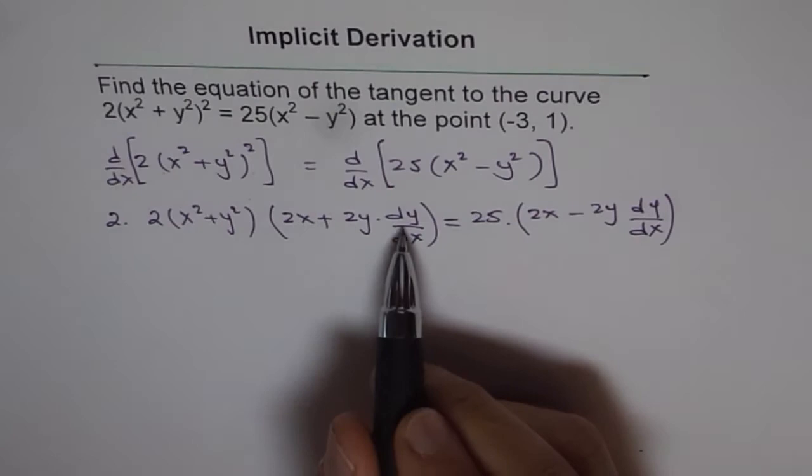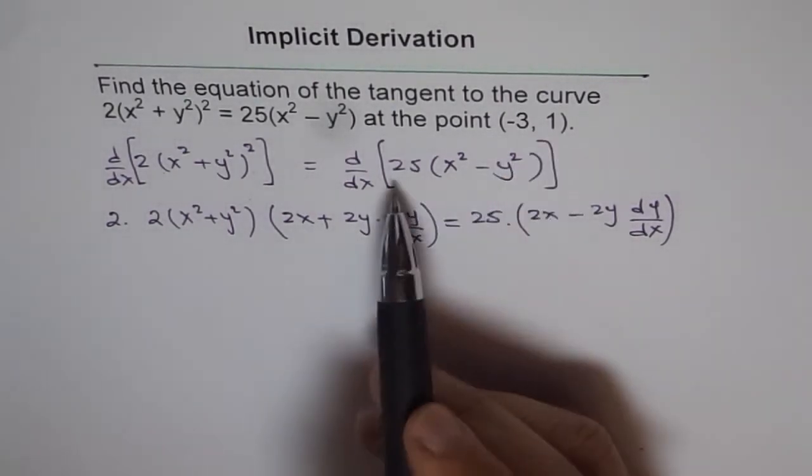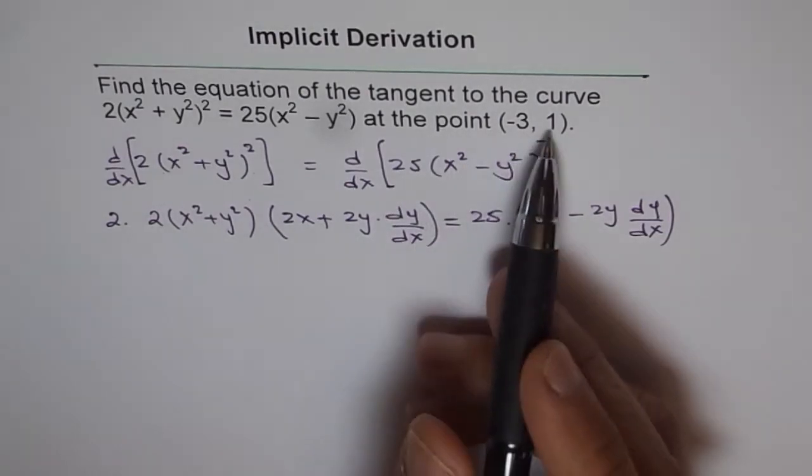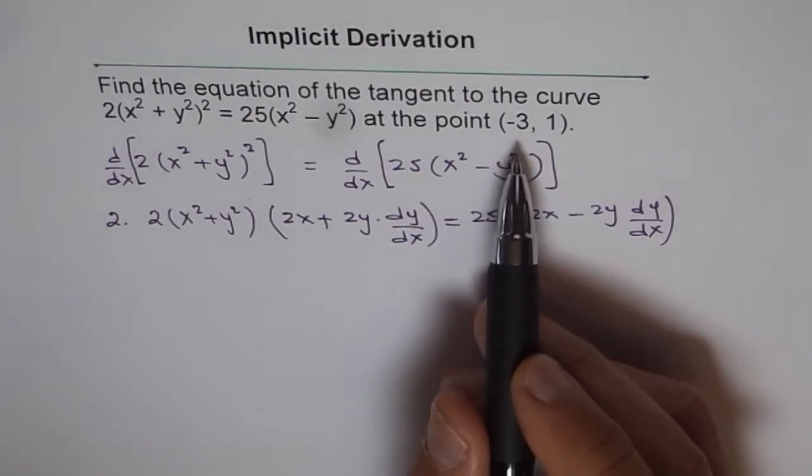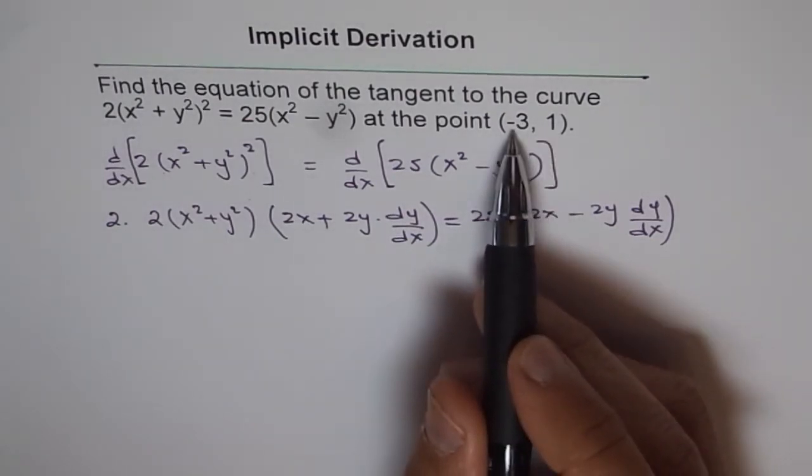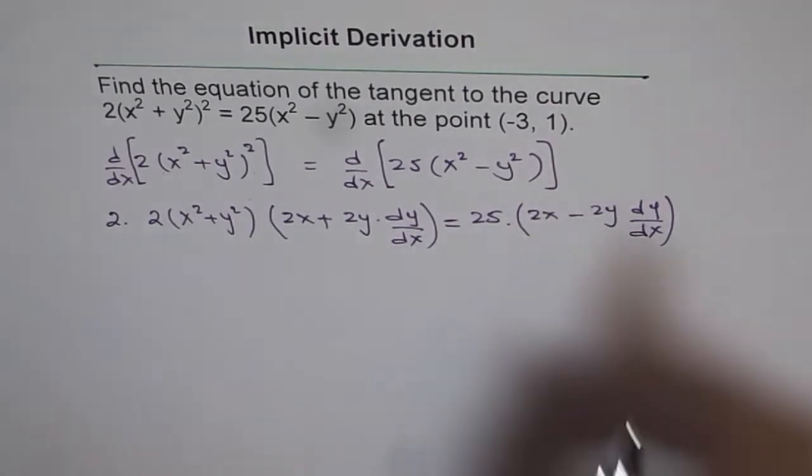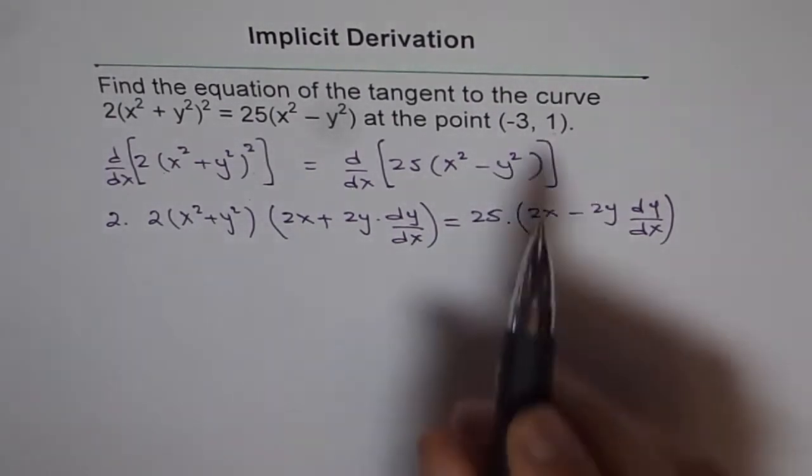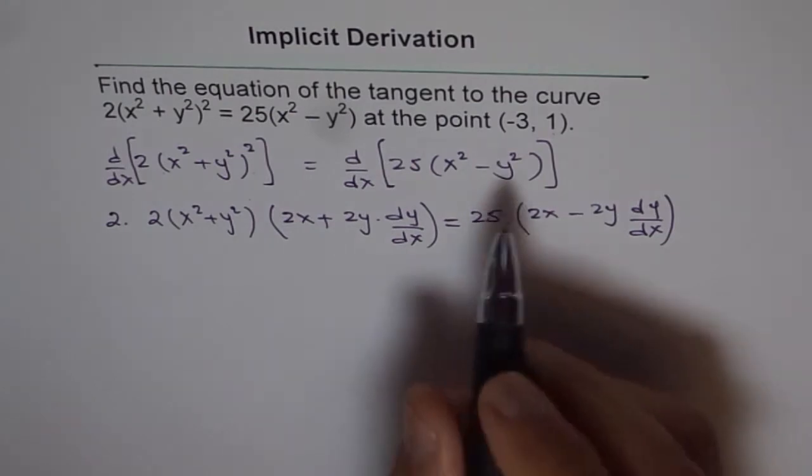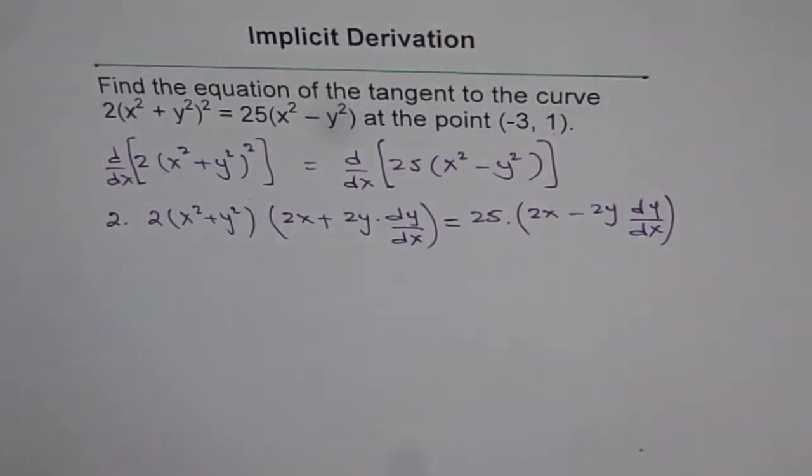Now we'll combine dy/dx terms and then solve for the slope. We know x is -3 and y is 1. So rather than simplifying all this, it's a good idea to plug in x as -3 and y as 1. Let's do it right here. What's the point in isolating dy/dx and then doing it? This is a very critical step.